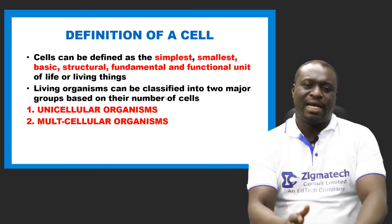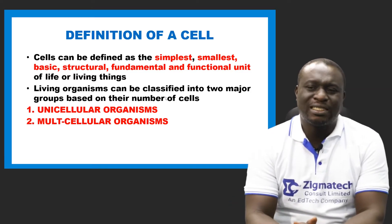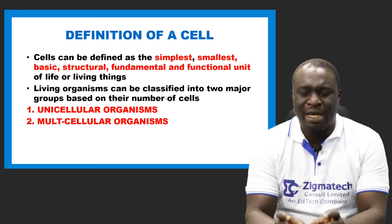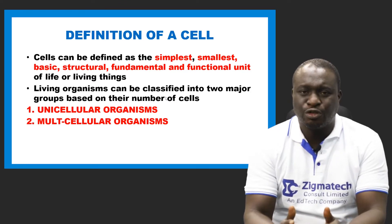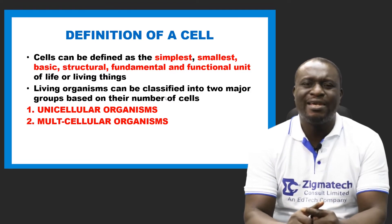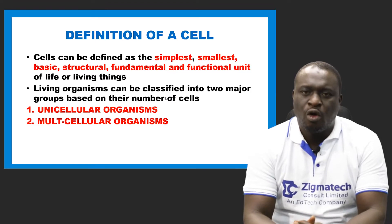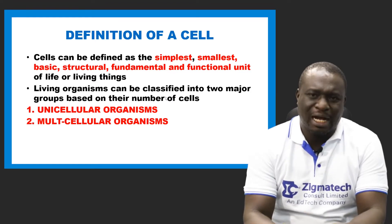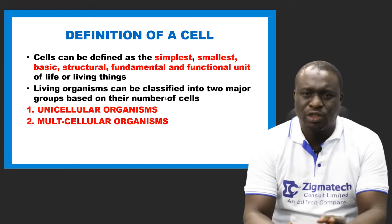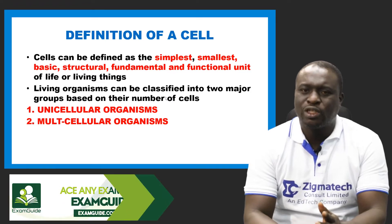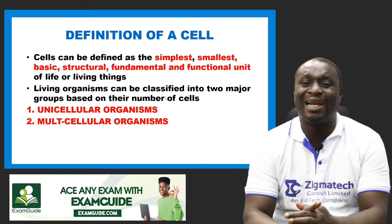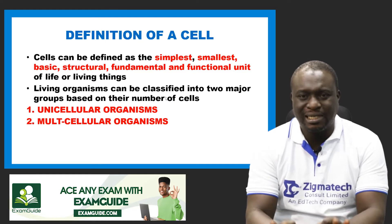Living organisms can be classified into two basic groups based on their number of cells. All living things are made up of cells — this includes plants, animals, unicellular and multicellular organisms. Everything that is alive has cells.